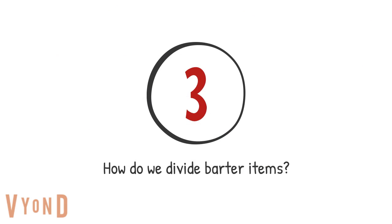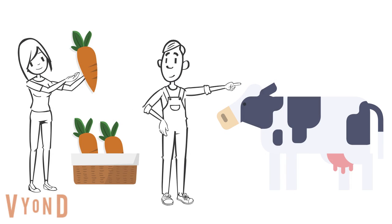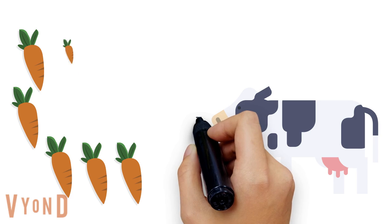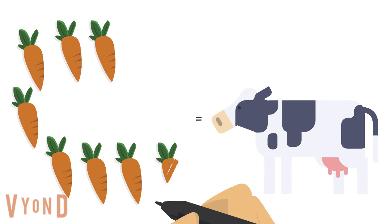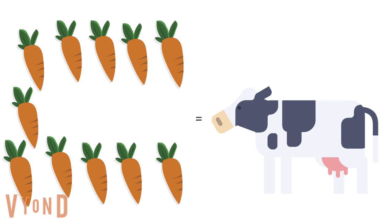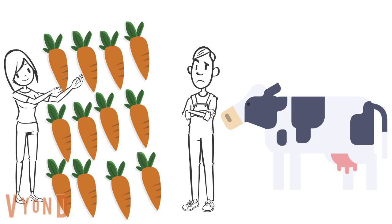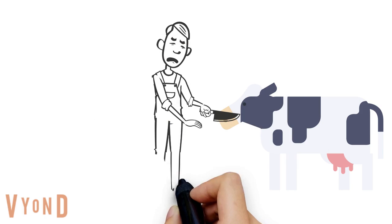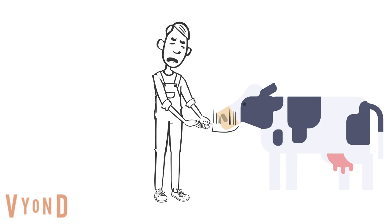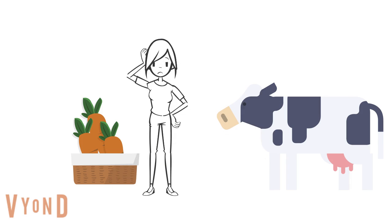Another problem is, how do we divide bartered goods? What if Mary wanted to buy a living cow, but she only had carrots? A cow is worth a lot more than carrots, so she would need bags and bags and bags of carrots to buy a cow. But what if Mike doesn't want a house full of carrots? Mike can't cut off the cow's leg to give Mary a smaller piece. So how can Mary get the cow?